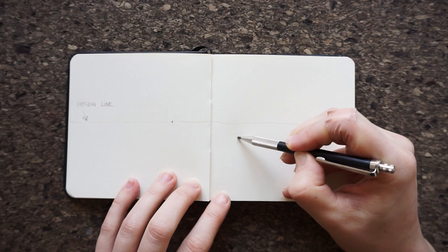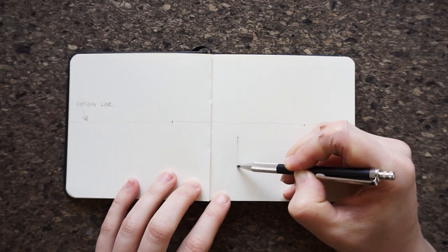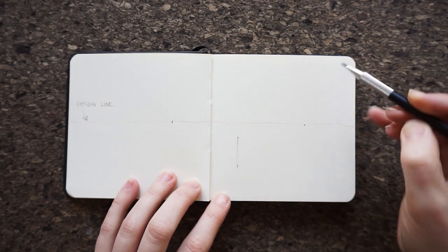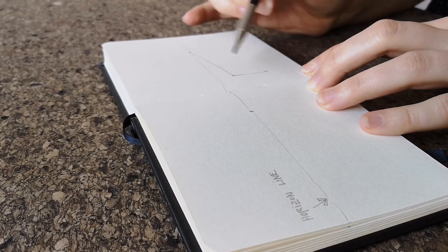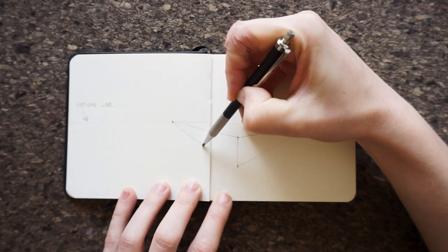Next we'll draw the edge of the cube that's facing us. At this point it's just a vertical line. Now connect the endpoints of the vertical line and the vanishing points with construction lines.